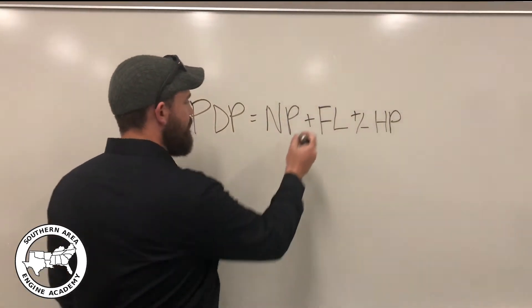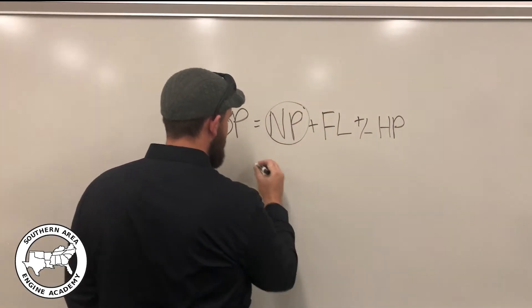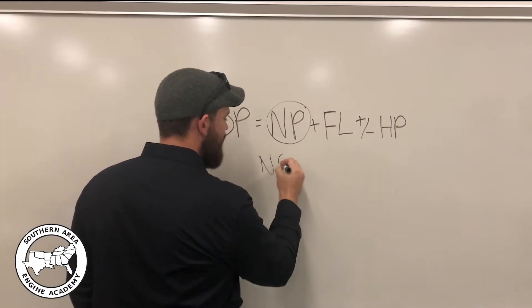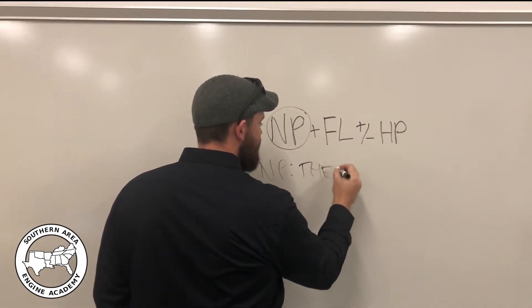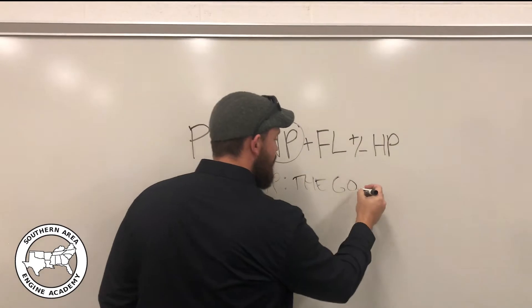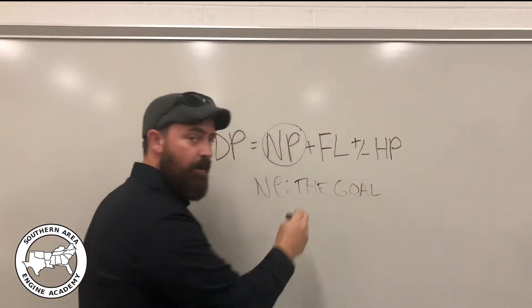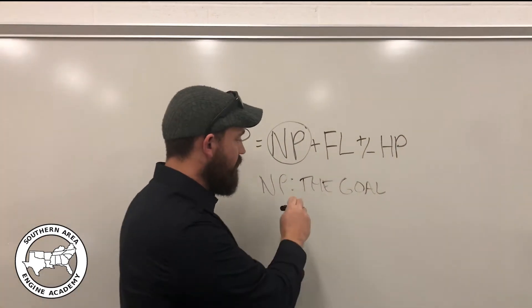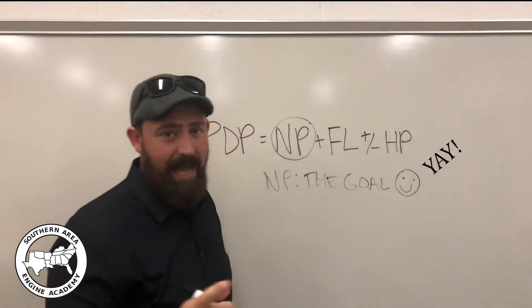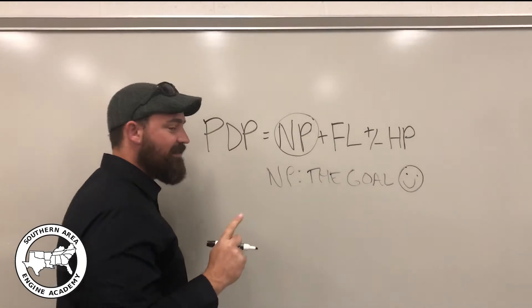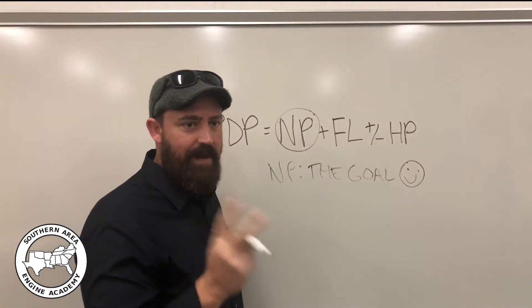So for the first part of our equation, we have NP, or nozzle pressure. NP is important simply because that's the pressure we need at the end of the lay to make our nozzle operate correctly. That's the goal. And operating at the right pressure leads to happy firefighters, and we like happy firefighters.